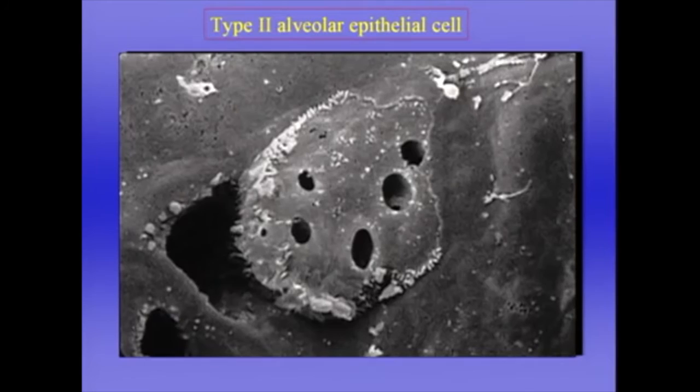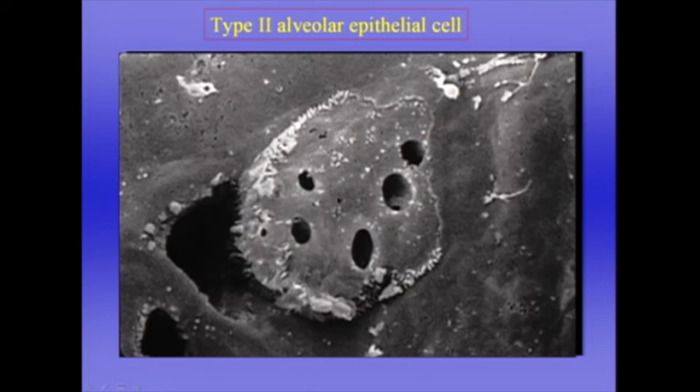Now let's compare that with the type 2 alveolar epithelial cell — it's quite different. First of all its shape is quite different; it's got a sort of globular shape. It's got a ring of microvilli — little hair-like structures around the edge, a bit like the tonsure of a medieval monk. And you can see the holes through which it's secreting material onto the alveolar surface.